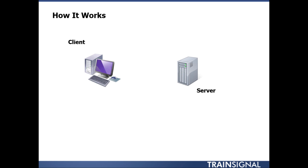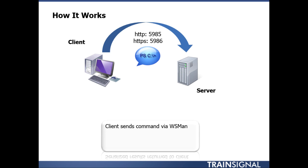The remoting I'm talking about is when we want to run a command on a remote machine or work with a PS session, which I'll cover later in this course. The client sends a command — usually a PowerShell command — via WSMan to one or more servers. By default, PowerShell uses ports 5985 and 5986 for HTTP and HTTPS connections, respectively.